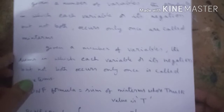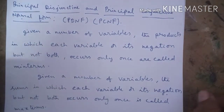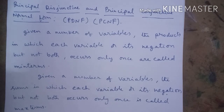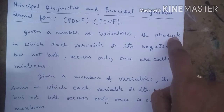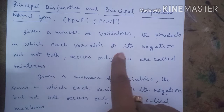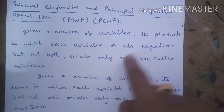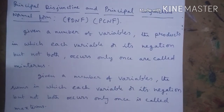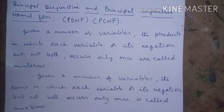Now we will find the definitions of PDNF as well as PCNF — principal disjunctive normal form and principal conjunctive normal form. Given a number of variables, the products in which each variable or its negation, but not both, occurs only once are called min terms.